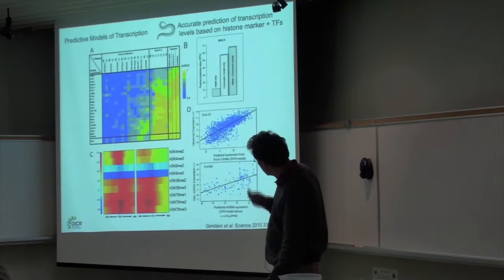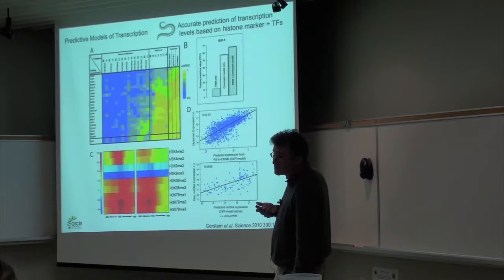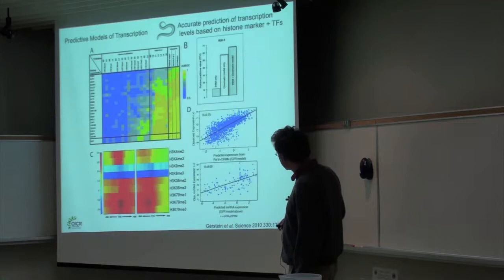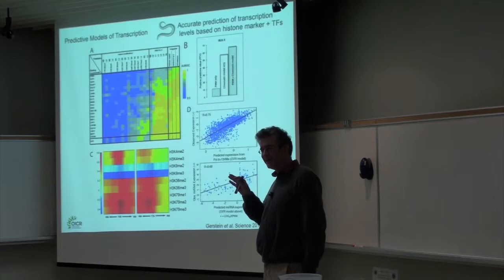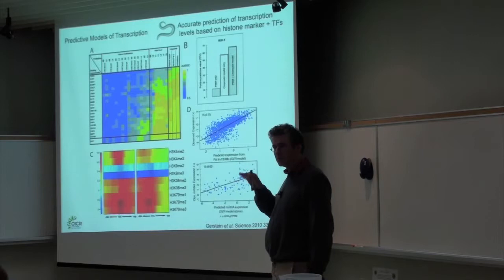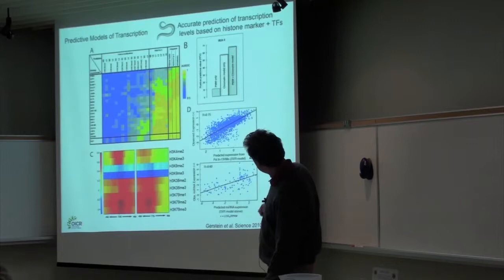Another highlight was the ability to predict the expression level of genes just from the combination of histone marks and transcription factors. The model is quite good — here's what the model predicts versus the observed expression from RNA tiling array and RNA-seq; it's really quite predictive. One caveat is that polymerase binding goes into the model, and many histone marks are the consequence of active transcription rather than the cause. It would be ideal to do this with transcription factors alone, but at the time of publication, less than 10% of transcription factors had been examined.